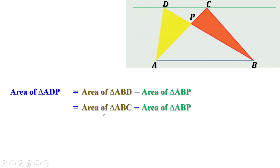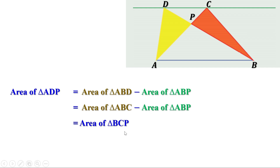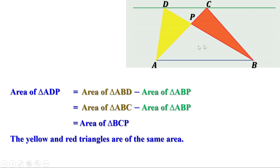Area of triangle ADP = area of triangle ABC − area of triangle ABP. When you subtract the area of triangle ABP from triangle ABC, what remains is the area of the red triangle, that is triangle BCP. Therefore, the area of triangle ADP equals the area of triangle BCP — the yellow and red triangles are of the same area.